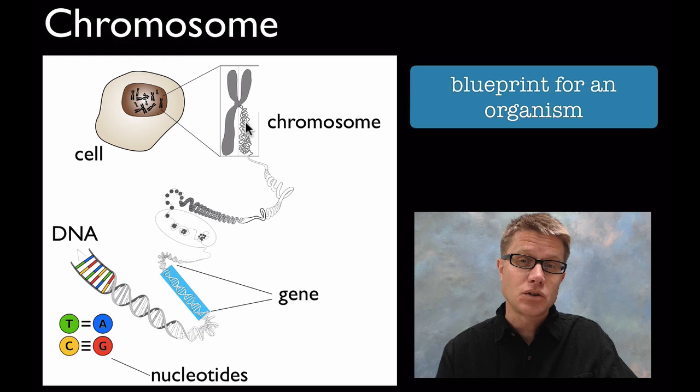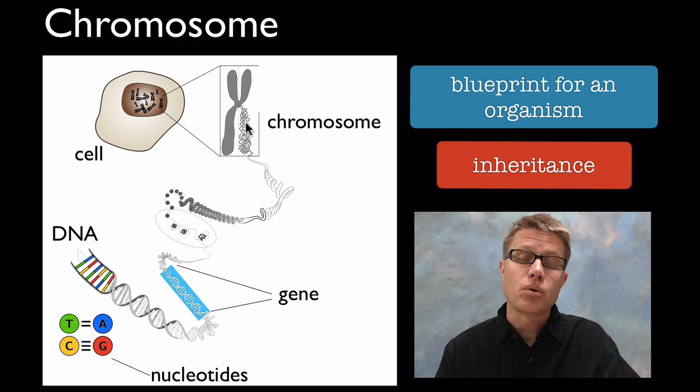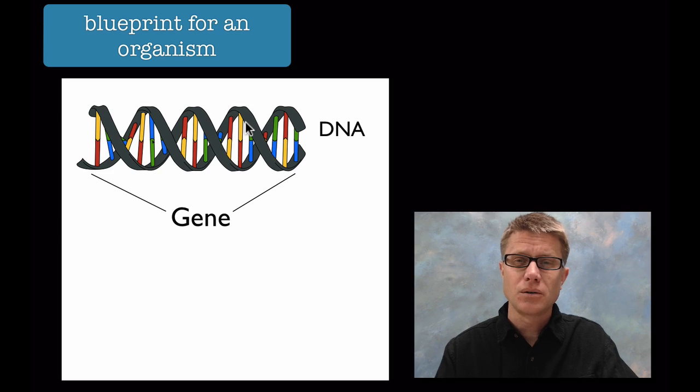What do chromosomes do? Number one, they're a blueprint for how to make an organism—the directions on how to make a human. They're also important in inheritance. The chromosomes are what you pass on to the next generation and what you receive from the generation before you.